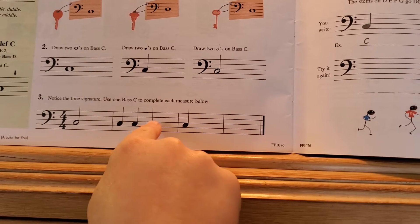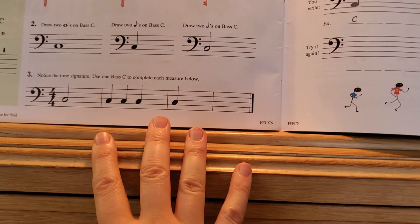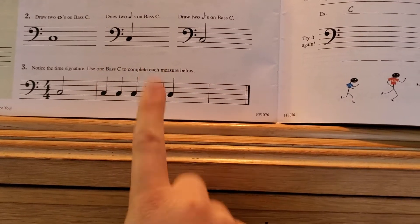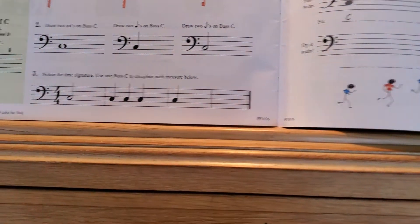And then you have quarter, quarter, quarter - so you have three beats and you need four. So you need one more beat. So you would draw one more bass C.